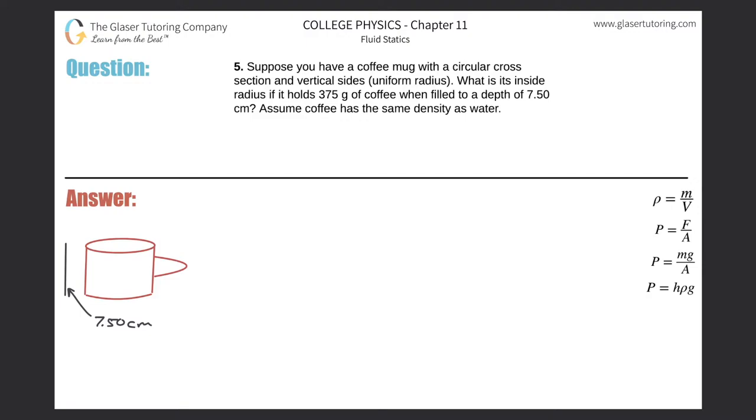Number five. Suppose you have a coffee mug with a circular cross section and vertical sides, uniform radius. What is its inside radius if it holds 375 grams of coffee when filled to a depth of 7.5 centimeters? Assume the coffee has the same density as water.